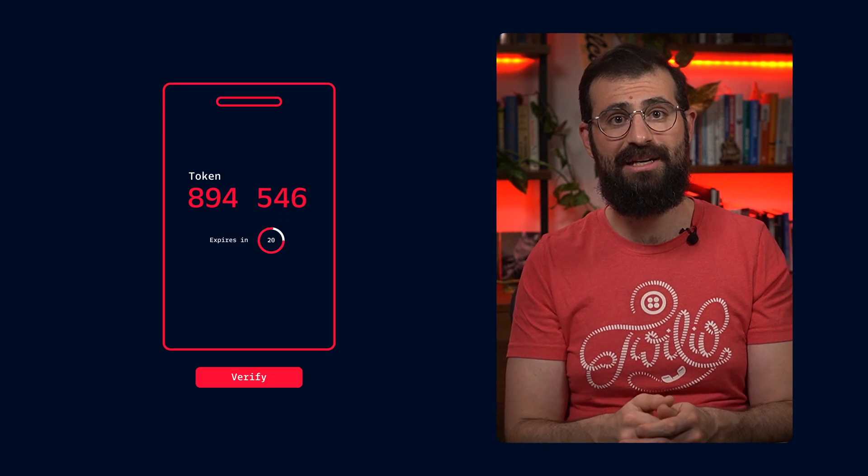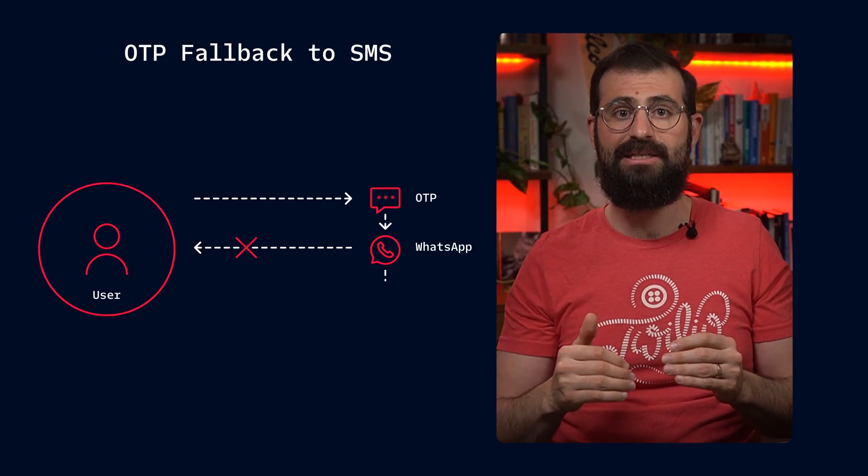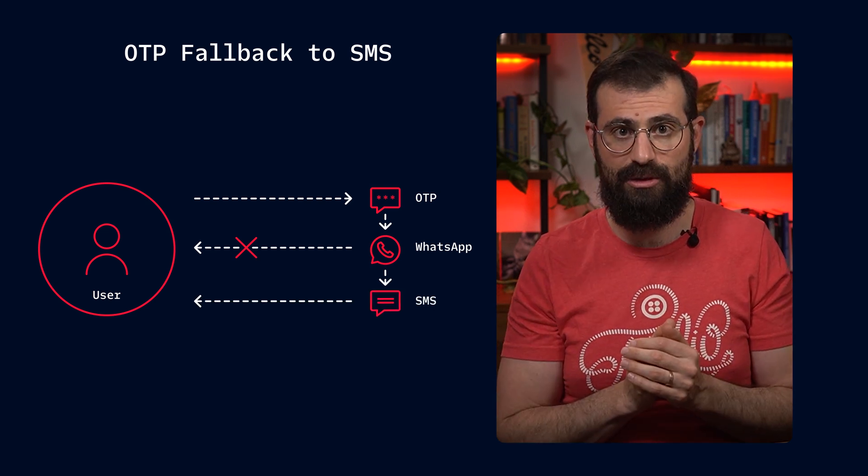Continuing on the WhatsApp train, let's talk about everyone's favorite pastime, waiting for confirmation codes. Verify will now always fall back from WhatsApp to SMS to ensure that your OTP or one-time passwords get delivered. Starting on March 1st, if a customer is not accessible from WhatsApp due to an outage, a service issue, or even an outage during a service issue, it will automatically fall back to SMS. You can always opt out of this, and if a fallback occurs, the billing will be as if you had sent an SMS OTP request in the first place.